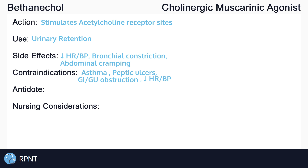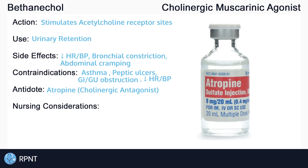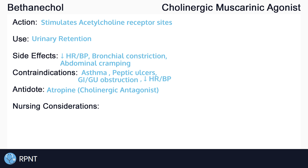It is good to know that if a client were to overdose on bethanachol, it is possible to reverse the effects by providing a cholinergic antagonist such as atropine. Signs and symptoms of a bethanachol overdose include an increase in nausea and vomiting, abdominal cramps and diarrhea, excessive salivation, and urinary and bowel incontinence.